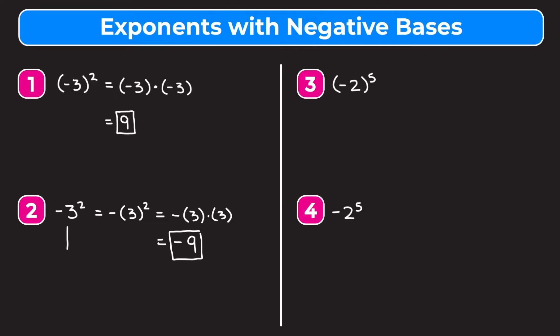If you want to think about it a different way, you can think about this as negative 1 times 3 squared. Order of operations tells us to square the 3 first, which is 9, and then we multiply negative 1 by 9, which comes out as negative 9. Either way you do it you should get the same answer of negative 9.